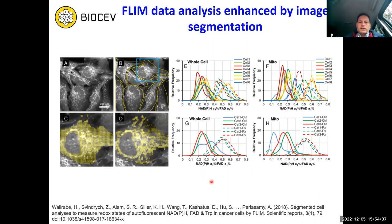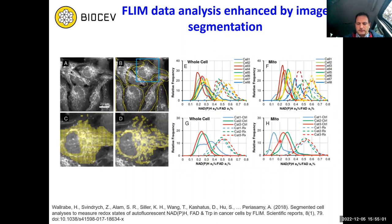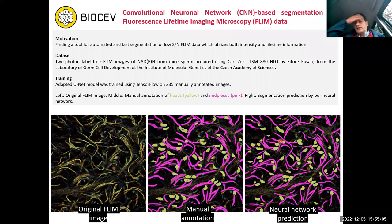I would also like to highlight the importance of image segmentation. The data from this last paper showed that when taking the whole signal, the differences between fingerprints are not so significant. Once they properly segment the images, they can get clear differences between the mitochondria and other signals. In our facility another project was to follow the metabolism of sperms.